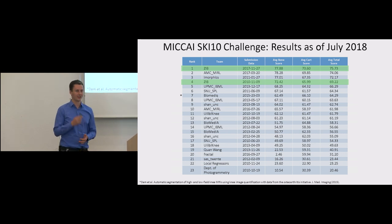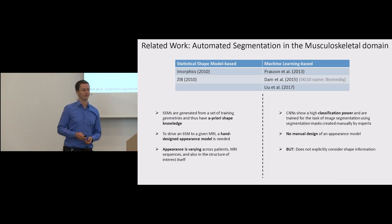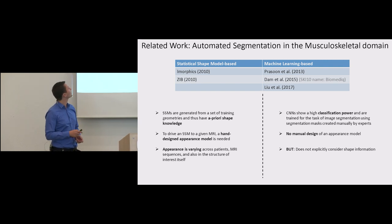These statistical shape models can be used within a segmentation method to generate geometrically plausible segmentation masks. Since 2010, many other teams have submitted results to the SKI10 challenge. Many of these new methods now employ machine learning. While statistical shape model based methods explicitly consider geometrical information, they usually need an appearance model which was designed for one specific MRI sequence. Usually this appearance model is hand designed and it is very challenging to design it for all this variation which can appear across MRI sequences, across patients, and across the structure of interest itself.